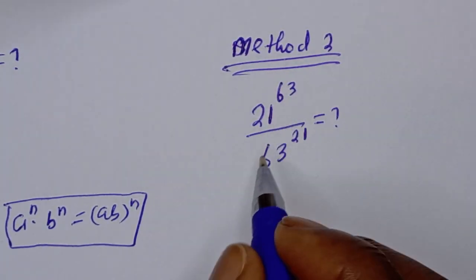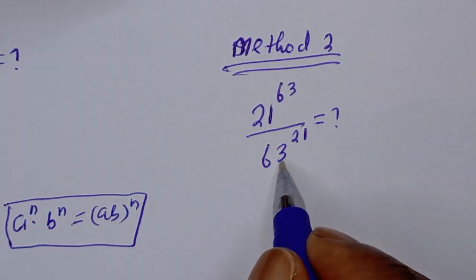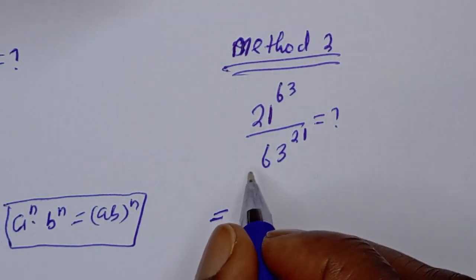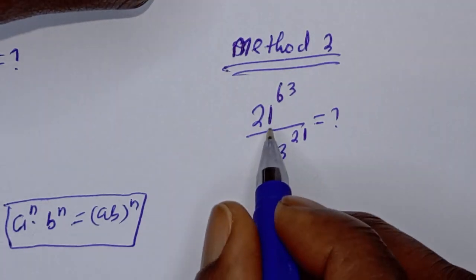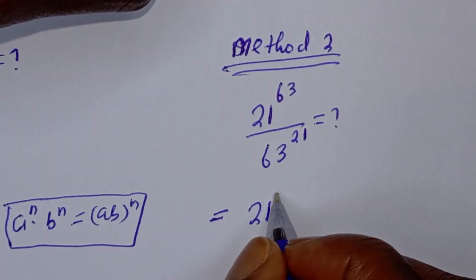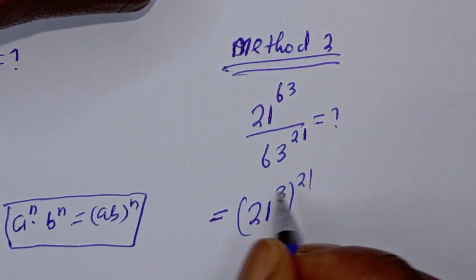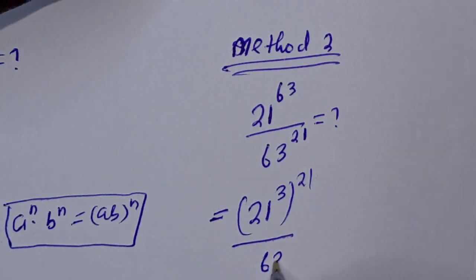Method 2: 21 raised to power 63 divided by 63 raised to power 21. Here, 21 raised to power 63 can be written as 21 raised to power 3, to the power of 21, over 63 raised to power 21.